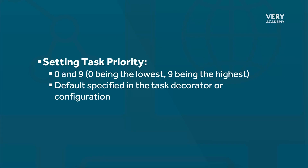It is very simple to assign these values to tasks, as we will see. Assigning task priorities gives us granular control over the execution order of tasks. Higher priority tasks will be processed before lower priority ones, allowing you to manage the order in which tasks are executed based on their importance or time sensitivity.